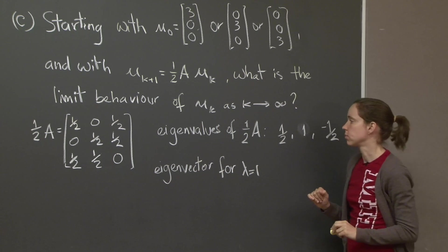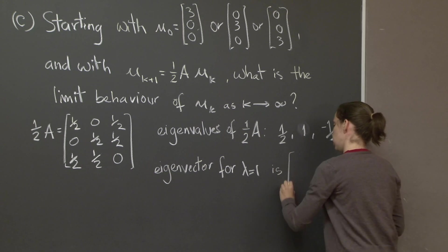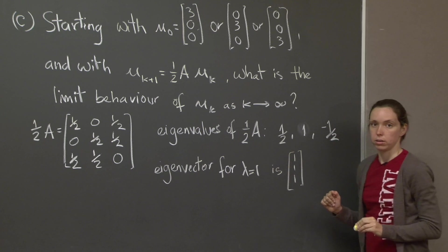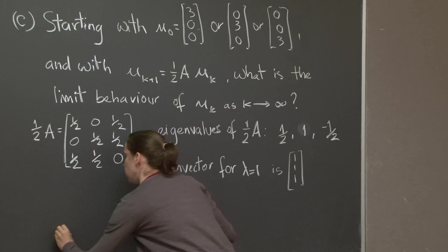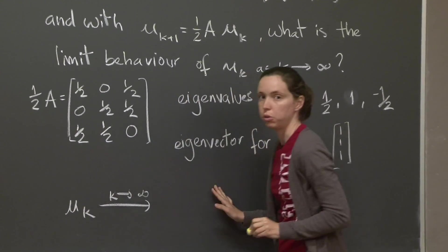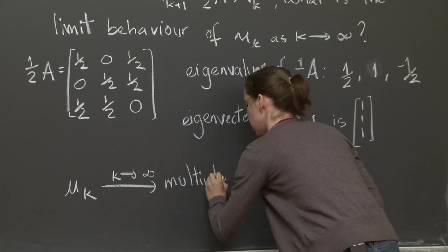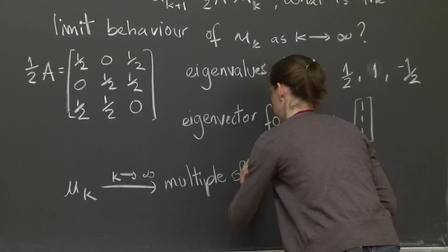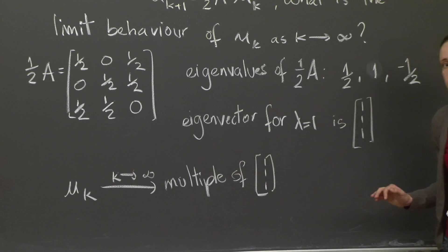So what is the eigenvector corresponding to 1? Eigenvector, well, you already know how to do this, so I will just write the solution. It is 1, 1, 1. That means that u k, as k goes to infinity, will converge to some appropriate multiple of this eigenvector 1, 1, 1.